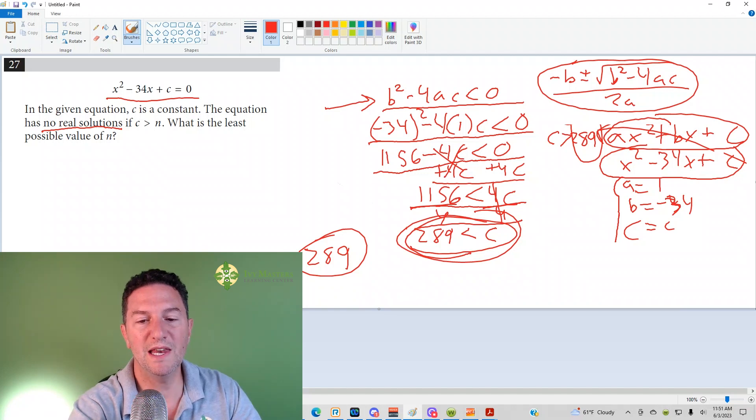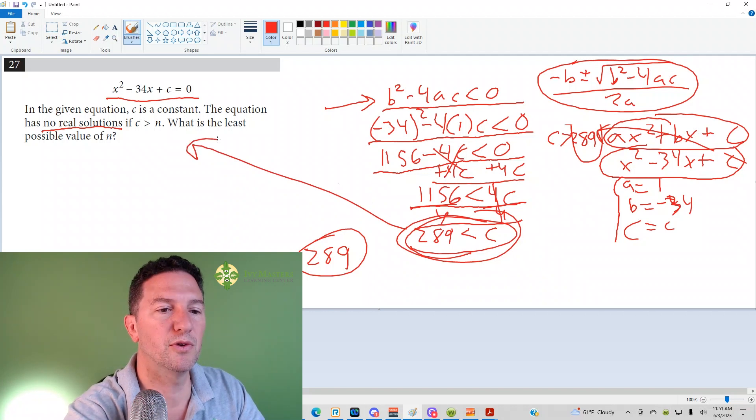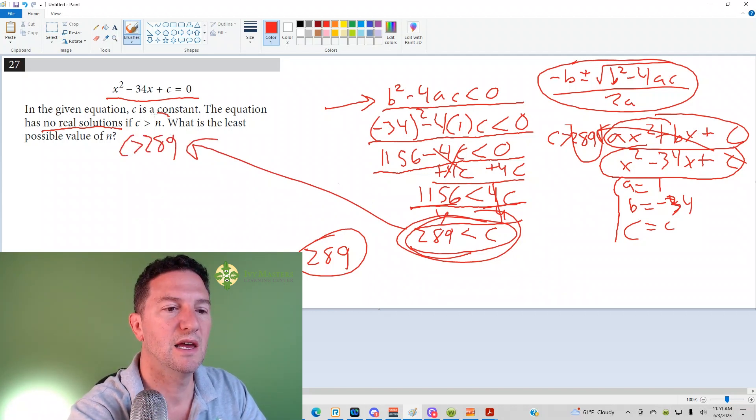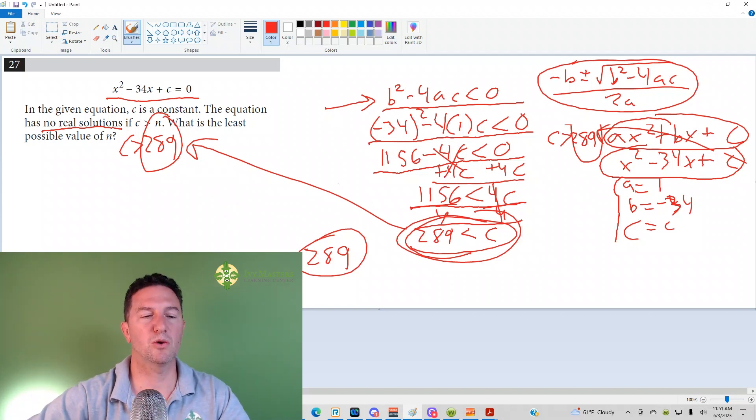So if 289 is less than c, and I swung that around, I'm going to put it over here, c would be greater than 289. And you can see that the 289 corresponds with the N.